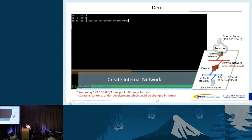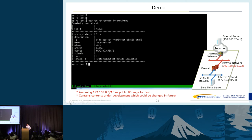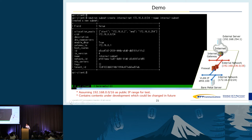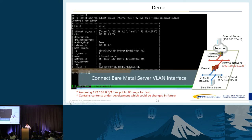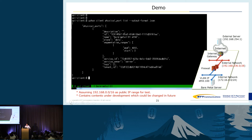First, we will create the internal network using a Neutron client. This shows that our API is compatible with the Neutron API, and we can use the Neutron client to create a simple network. We can also use the Neutron client to create a subnet to assign a private IP address. Then we will connect the bare metal server's VLAN interface to the internal network. This is our completely brand new API named physical port, which is dedicated to customers so they can see what kind of physical port they are using.